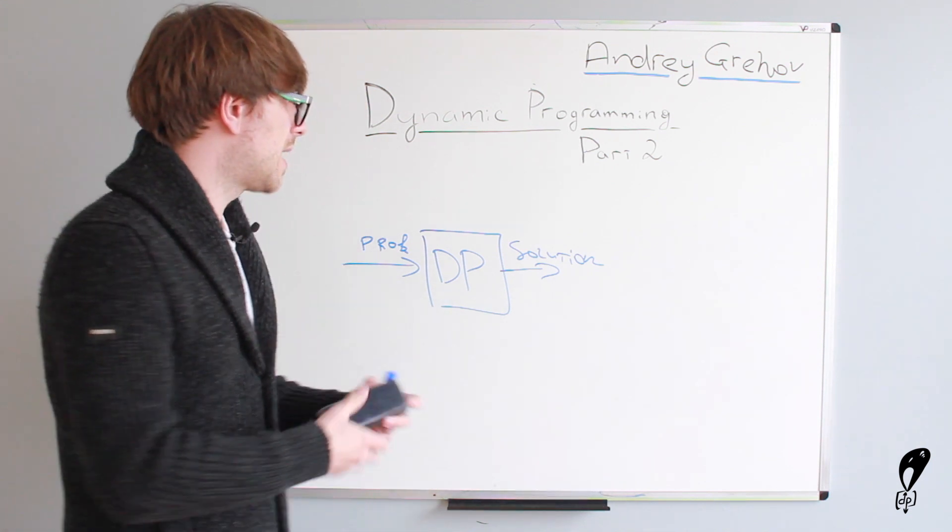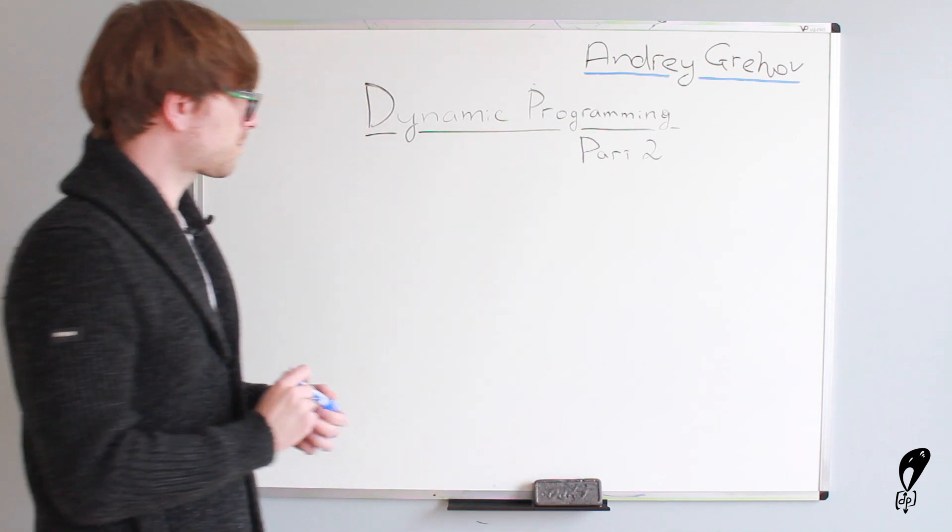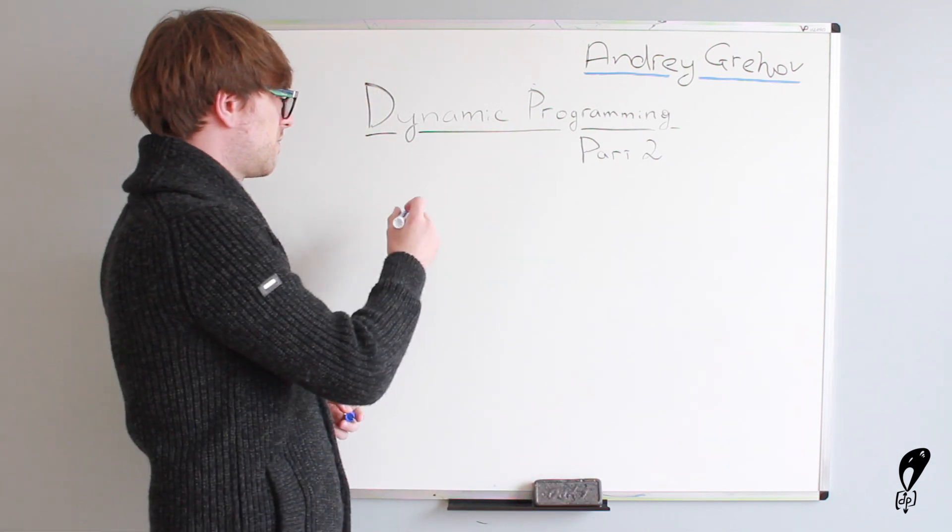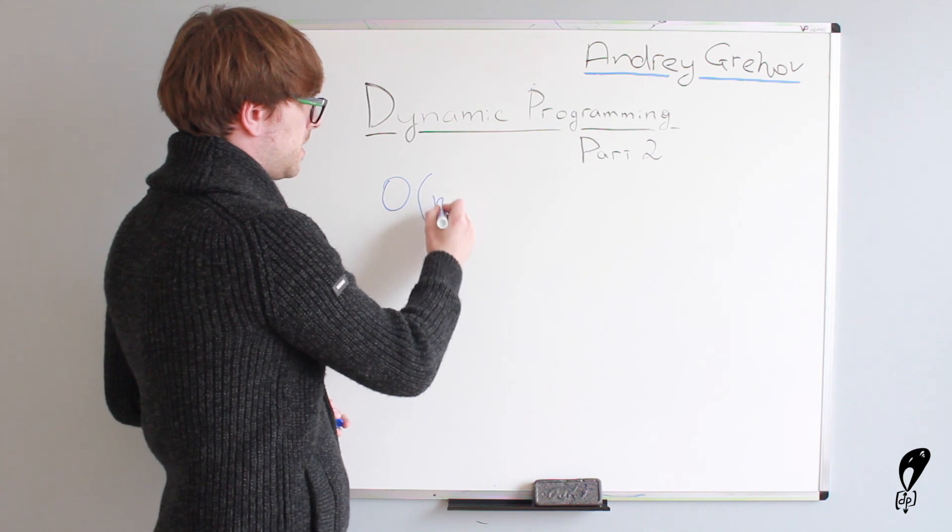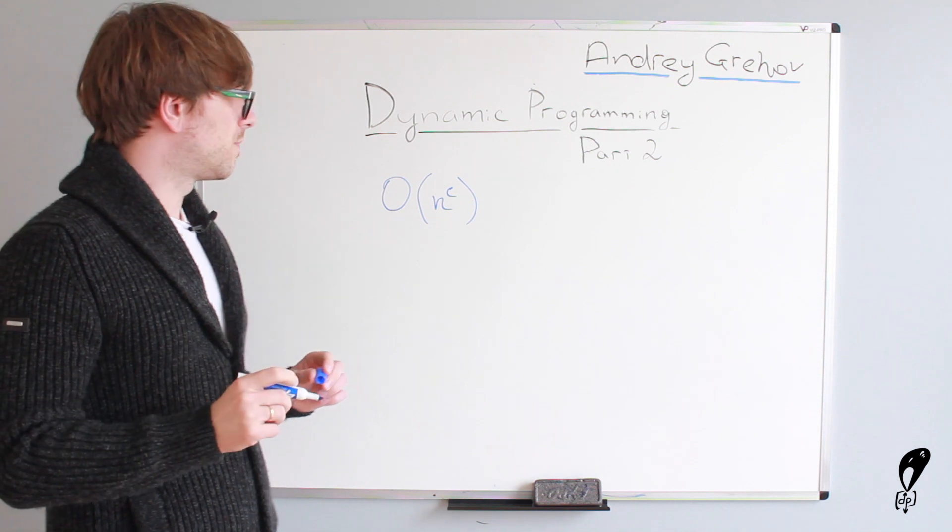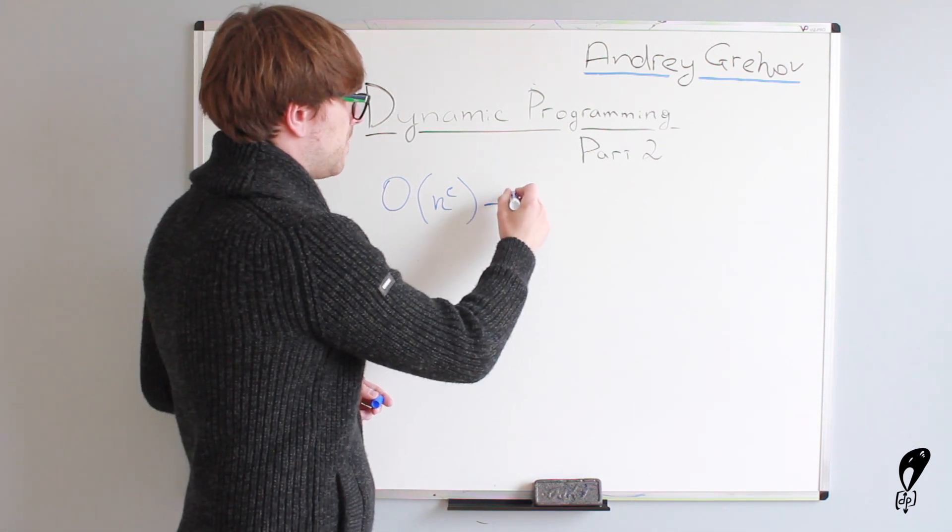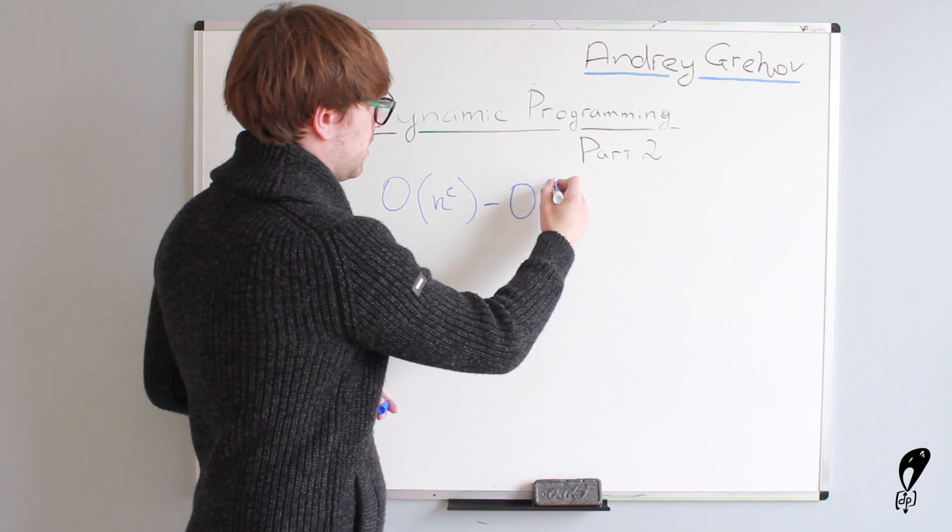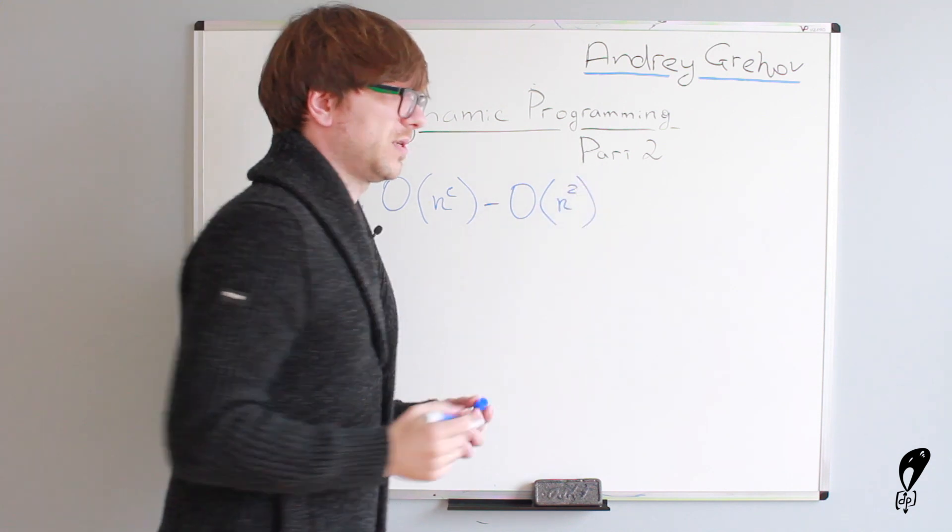And as a reminder, polynomial time means big O of n to the power of c. So, big O of n to the power of c, where c is a constant value. So, in this case, an example would be big O of n squared, right? Or n cubed, for instance.